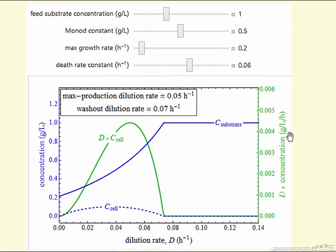And so this is essentially our production rate: flow rate times the concentration. Notice that it has a maximum somewhere, and we calculate that in the simulation.